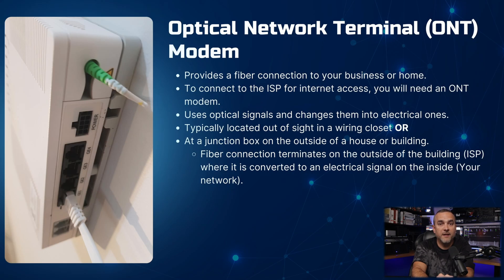A fiber connection to your business or home requires an Optical Network Terminal (ONT) modem to connect to the ISP for internet access. This connection uses optical signals that are converted to electrical ones. The ONT modem is usually installed in a wiring closet or at a junction box outside the building. The fiber connection terminates on the outside of the building for the ISP side, and is converted to an electrical signal on the inside for your network.